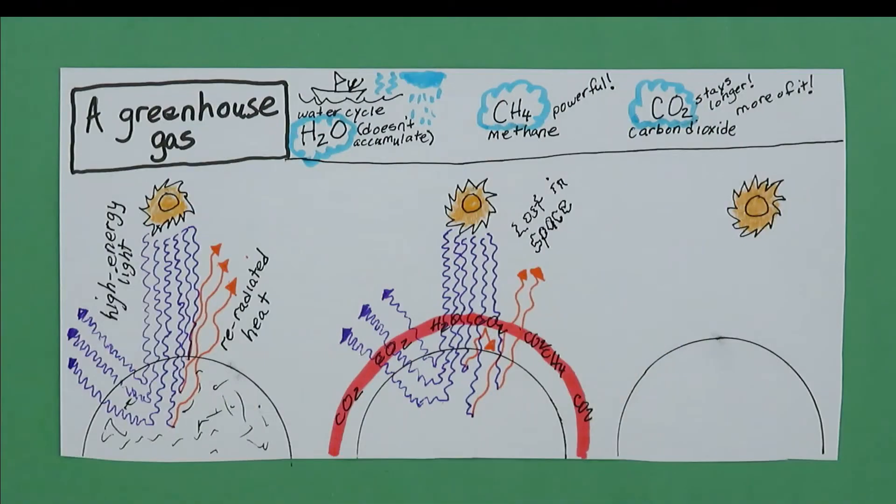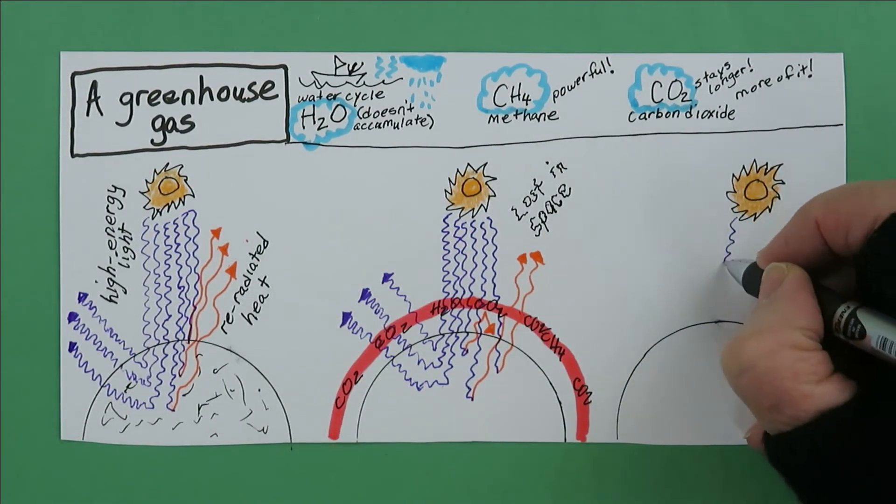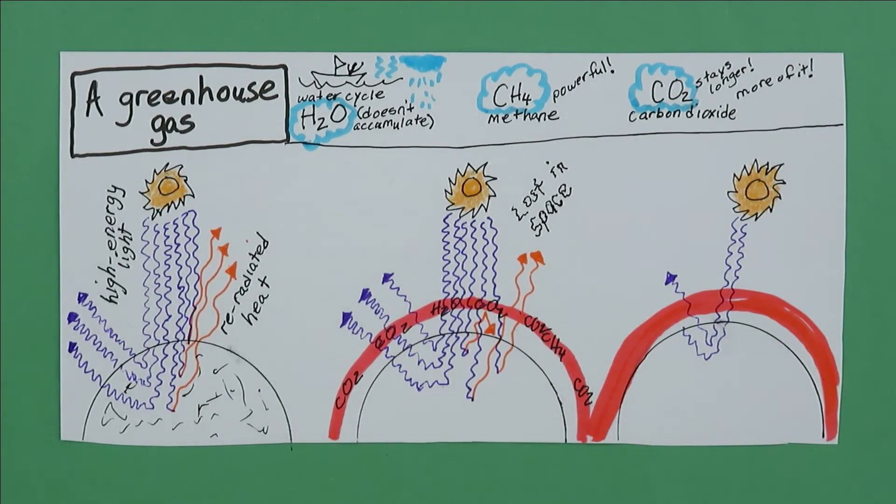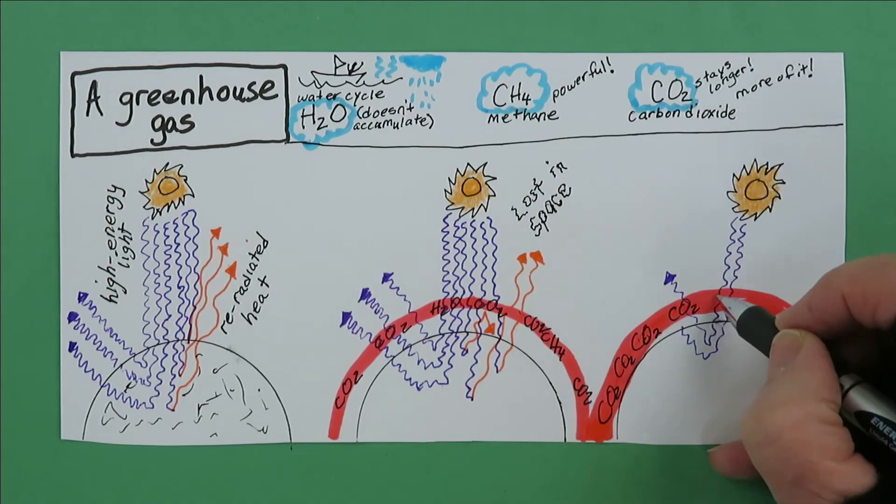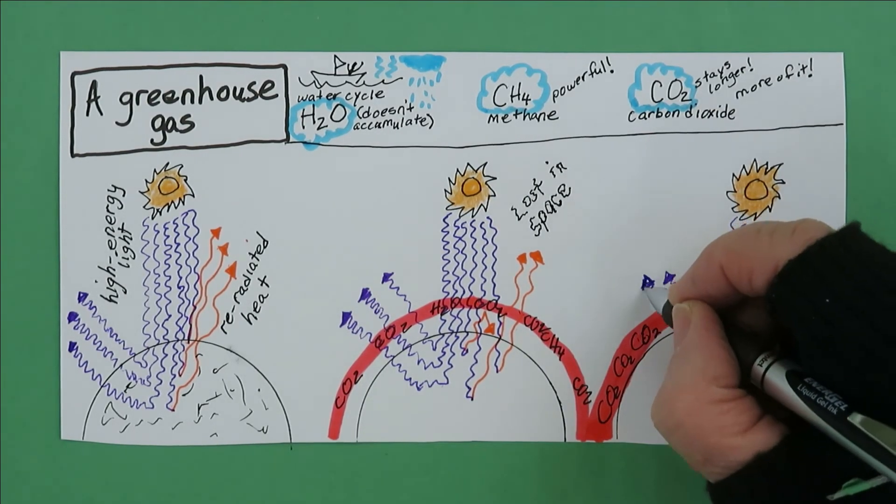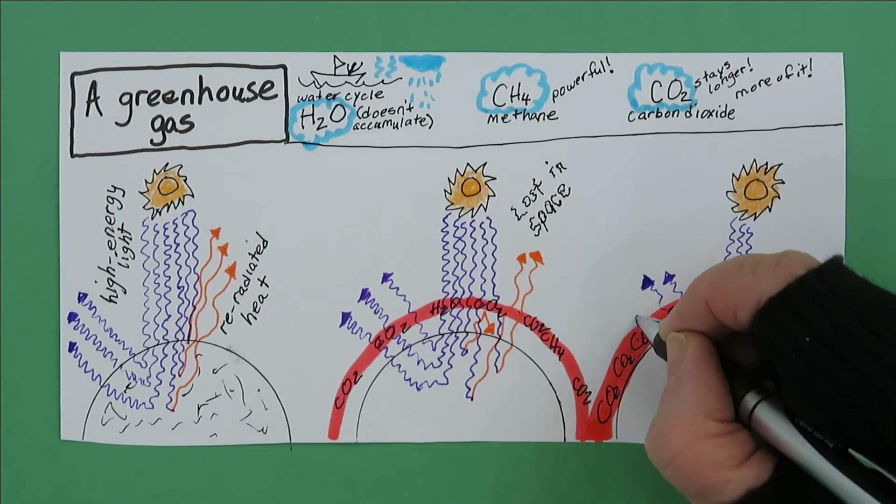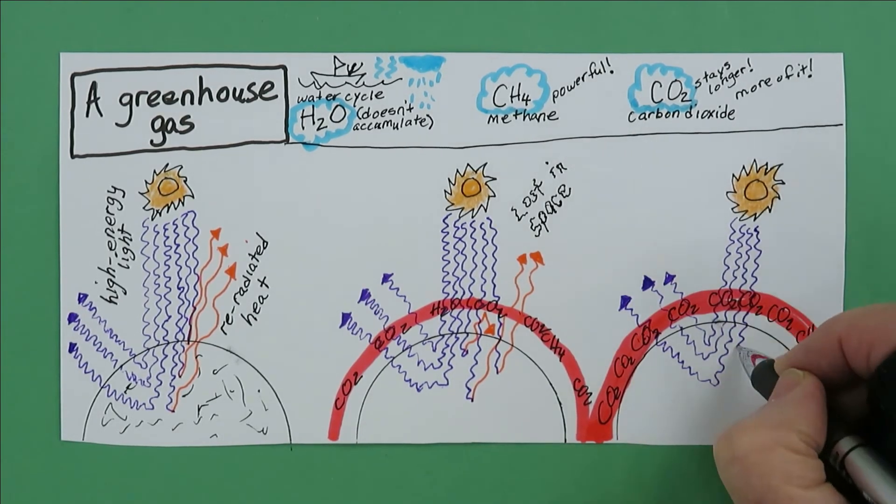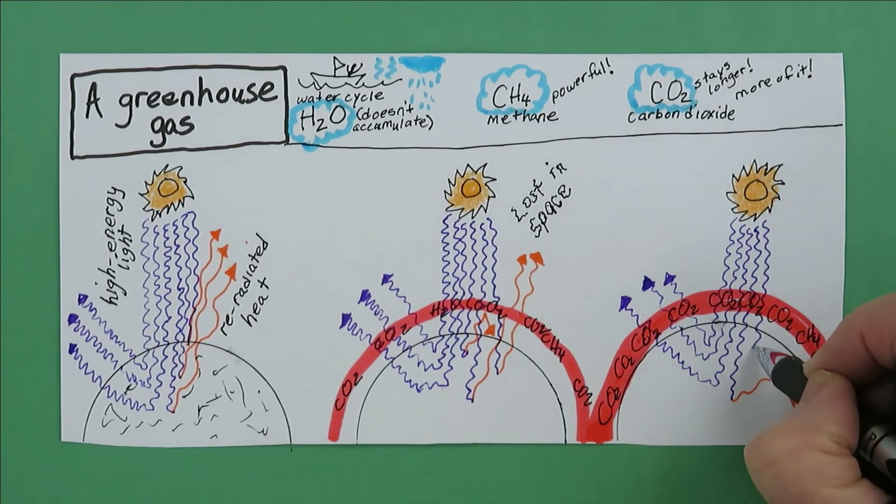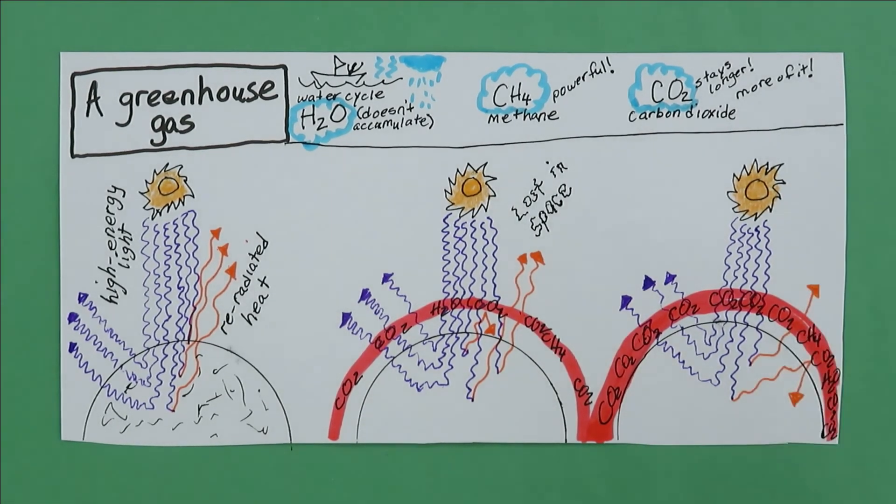Now let's look at that third Earth. It has a lot of extra greenhouse gases. Lots of extra CO2. As before, the high energy light passes through the greenhouse gases. Some reflects back. But now the part that gets absorbed and re-radiated as heat is much more likely to run into a greenhouse gas molecule.